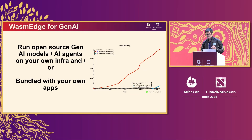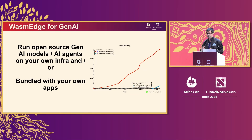Over the last few years, the adoption of WebAssembly as a technology has really grown several folds. Today, the WasmEdge project has more than 6,000 GitHub stars and is actively being used by many different projects within the CNCF ecosystem. The idea is that you can use WebAssembly to run and deploy AI models or AI agents directly on your own infrastructure, or bundle it with your own applications and serve them wherever you want.